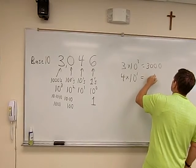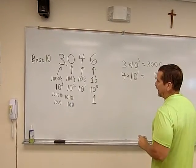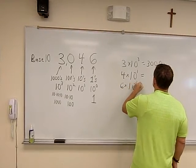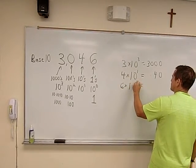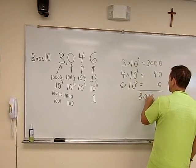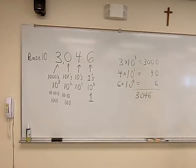I should write it nicely over here. And we've got a six times ten to the zero, which, ten to the zero is one. So we get six. You add them all together, you get three thousand and forty-six.